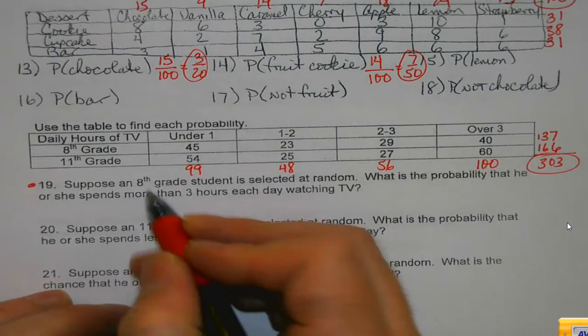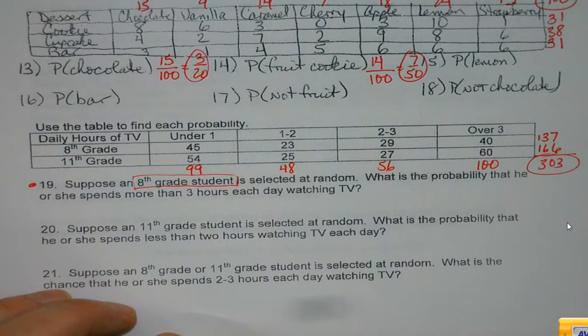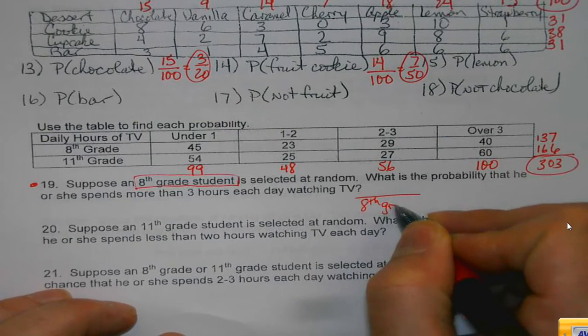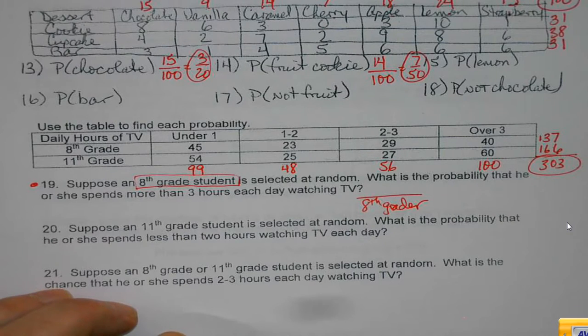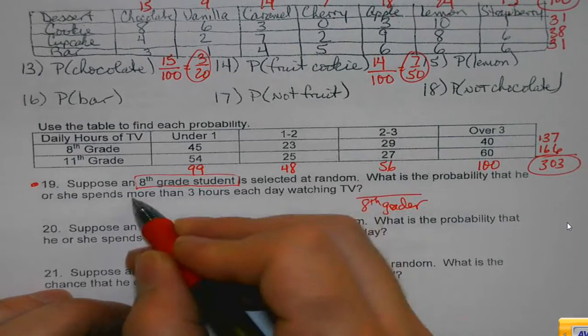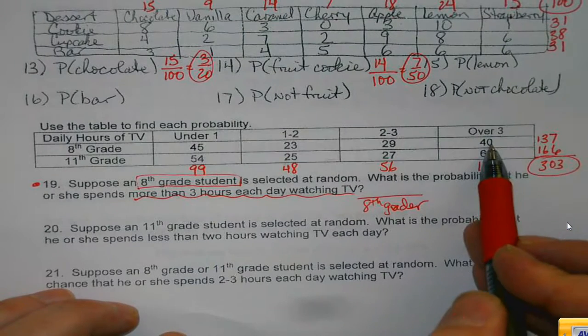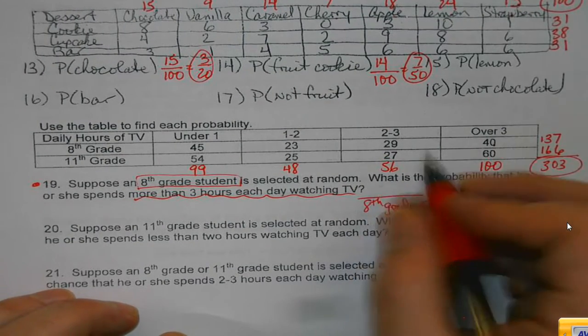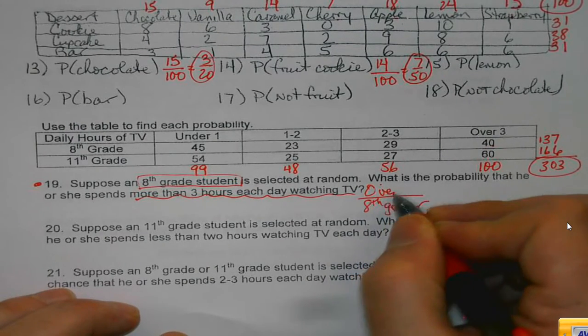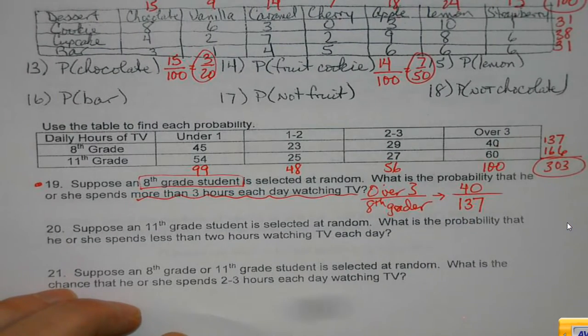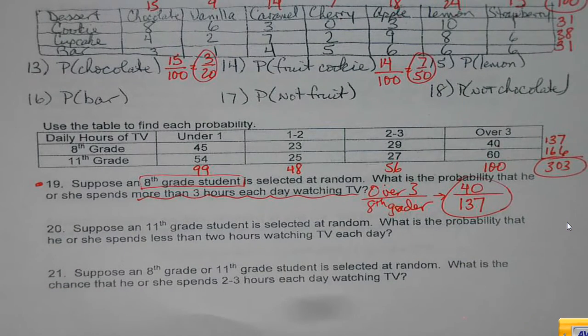Now, we get ready to get back into business here. Suppose an 8th grade student is selected at random. So, that's my big group here. The 8th graders. What's the probability that he or she spends more than three hours each day watching TV? Okay, 8th grader over three. That would be 40. And 8th grader, there's 137. So, it won't necessarily be the 303 on each one. If they give you a select group, that's the group that you're getting to choose from.